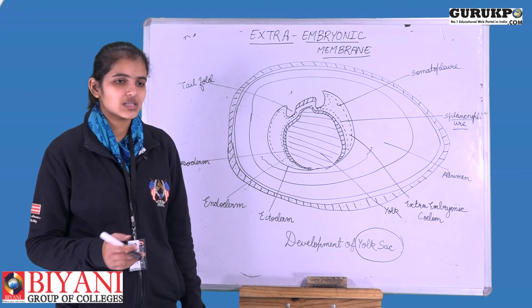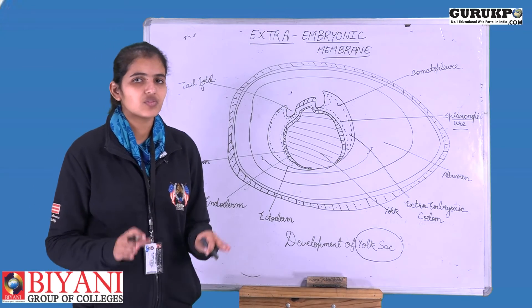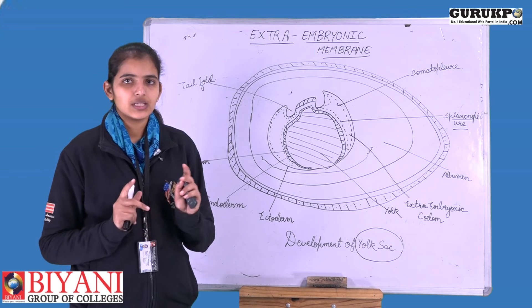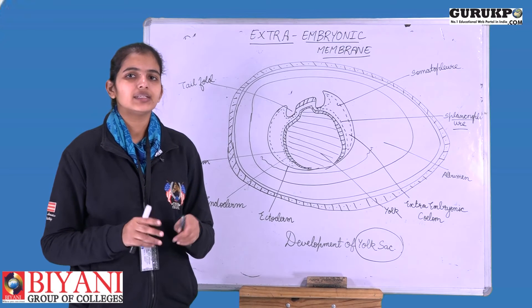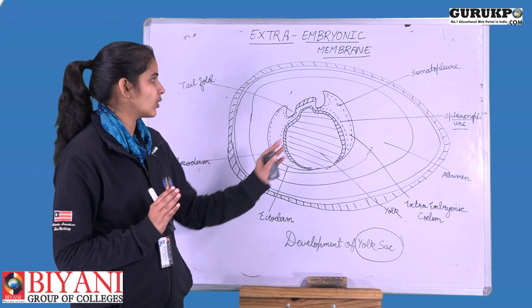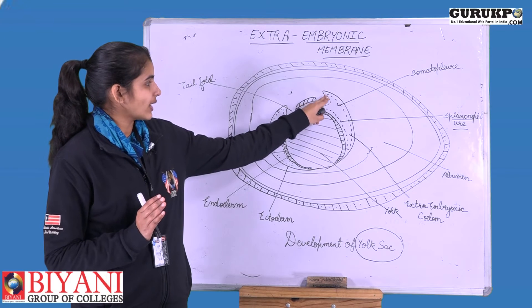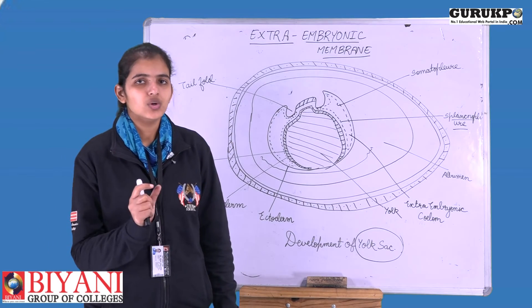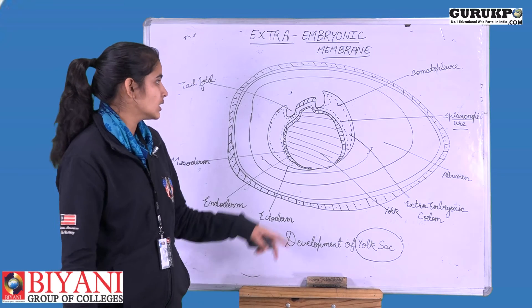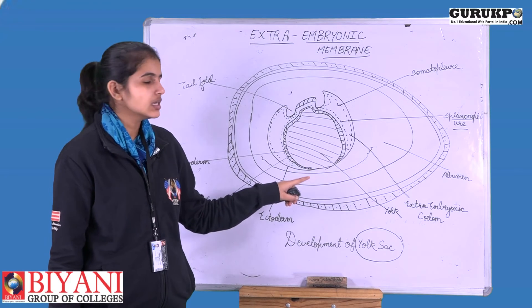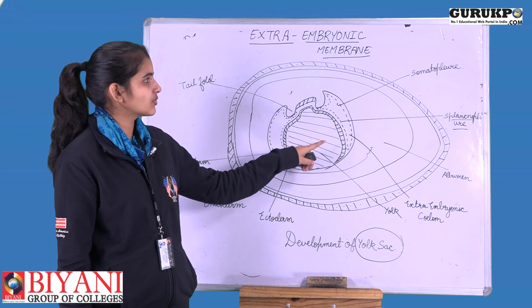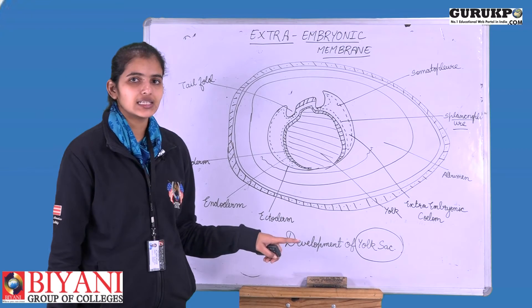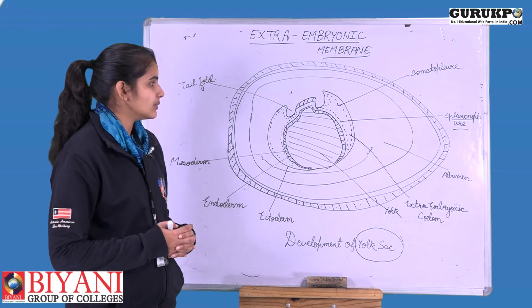The yolk sac is developed from the splanchnoplure of the embryo, or more specifically from the area opaca. There are two areas in the chick: area opaca and area pellucida. Area opaca is the region where all development of the embryo is occurring, while area pellucida is the area where cell density is a little low, allowing light to pass through it. The yolk sac is developed from the splanchnoplure of the area opaca.